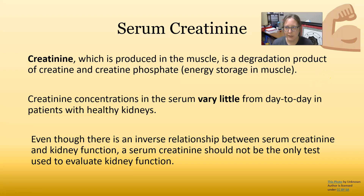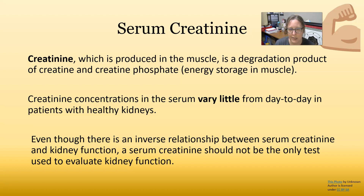Serum creatinine is produced in muscle and is a degradation product of creatine and creatine phosphate. Creatine phosphate is used for energy storage in muscle — it is the storage form of ATP that muscles store up for when increased activity and extra ATP are needed. Creatinine concentration in the serum varies very little from day to day in patients with healthy kidneys and is related to muscle mass. Although there is an inverse relationship between serum creatinine and kidney function, BUN should also be used together with creatinine, along with the clinical picture.